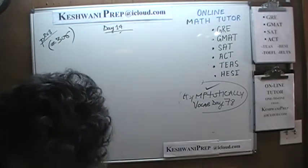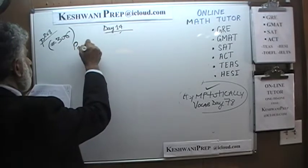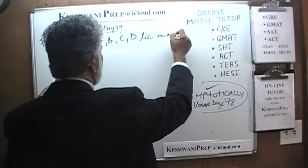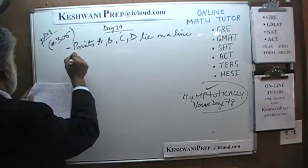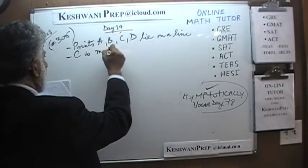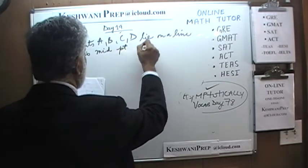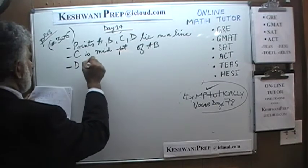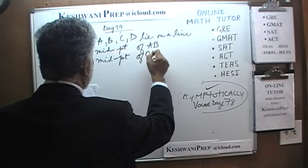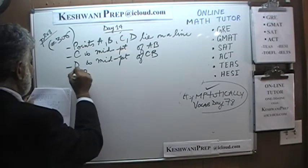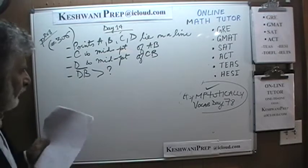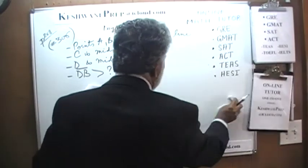Number 306. It says points A, B, C, and D lie on a line. We're told C is the midpoint of AB, and D is the midpoint of CB. The question is: is DB greater than 5? The best thing to do is draw out a picture.